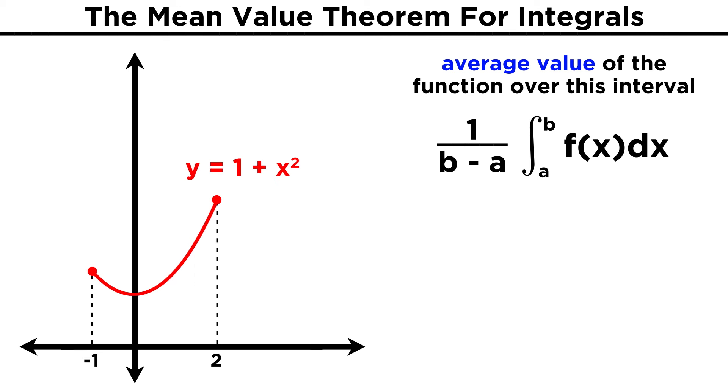To see how this works, let's apply the theorem to the function one plus x squared, for the interval from negative one to two. Well, let's plug things into this expression, with two for b, and negative one for a, giving us one third out here, and then the integral of this function will be x plus x cubed over three.